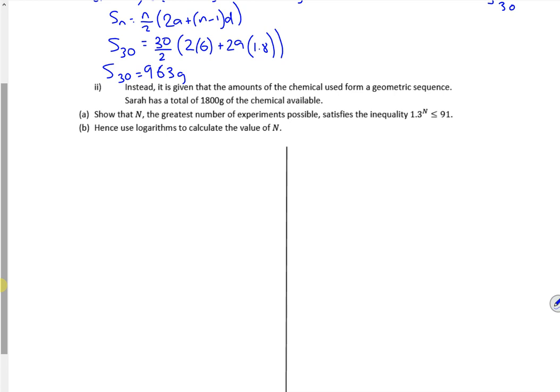So instead, it's given that it's geometric. So we're saying that a is 6, u₂, remember a is u₁, is 7.8. So that must mean then that r is one term divided by the one before. So that must mean that r is 1.3 according to the calculator. So I've got my a and I've got my r.